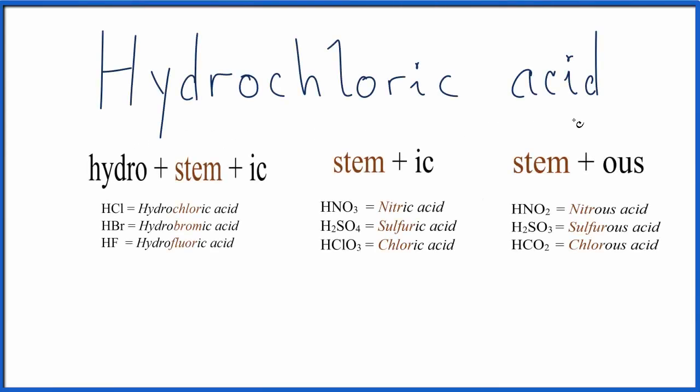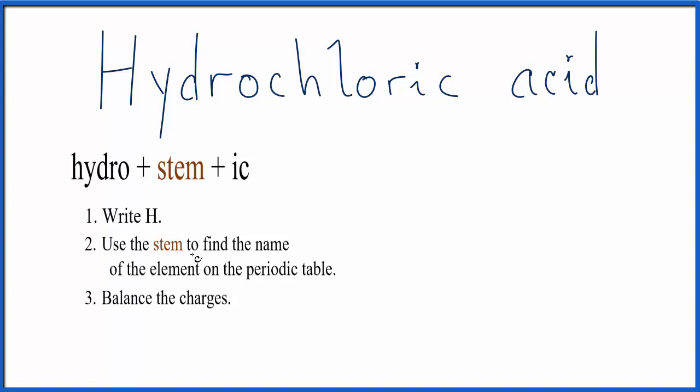To write the formula for hydrochloric acid, we use this table here and then we'll work backwards. So we have hydro at the beginning, that means we use rules for this type of acid beginning in hydro and then having the stem and ending in ic. So we use these rules here to write the formula. First we'll write H.